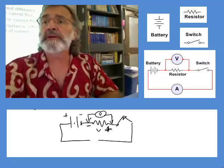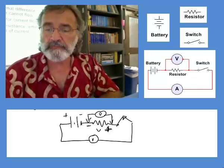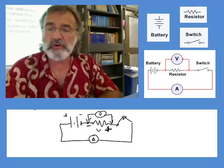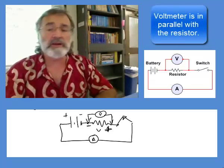If I was to put an amp meter in here, the symbol for that would be like this. So the voltmeter, this is called going in parallel, I'm going across the resistor here.